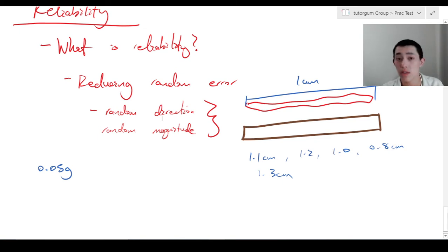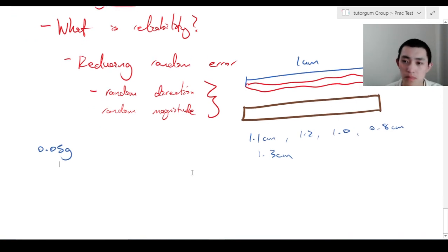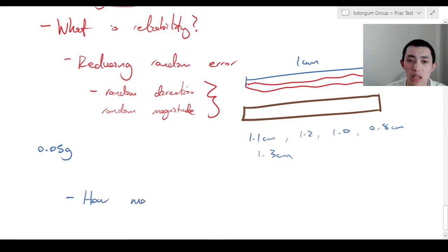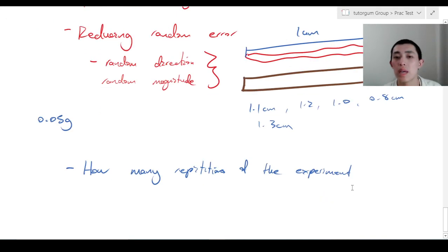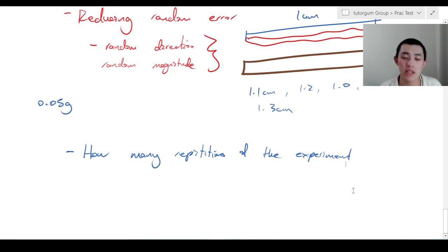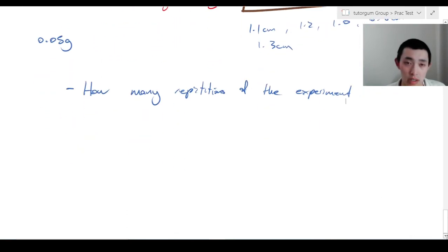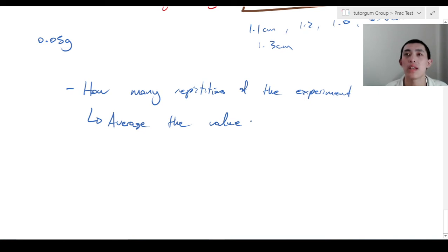Thankfully, because random error is in a random direction and a random magnitude, by using statistics, if you repeat the measurement over and over again, all the fluctuations should cancel out and you're left with the true value. So reliability very often gets clumped together with how many repetitions of the experiment you do. But it's not just how many repetitions — it's how many repetitions you do and then you average the values. Because just doing the experiment more times doesn't get rid of random error; you need to actually average them.